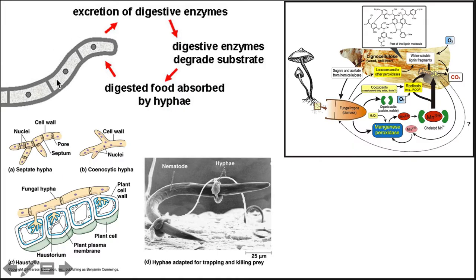Fungi are heterotrophs that absorb nutrients through external digestion — they secrete digestive enzymes into the substrate. Those enzymes degrade the substrate, and then the nutrients get reabsorbed by the hyphae. Fungi can break down many things: cellulose in wood, lignin in the cell walls of wood, and almost any carbon-containing compound, like even jet fuel. This is where the interest of bioremediation comes into play — fungi can break down harmful substances into less harmful ones.